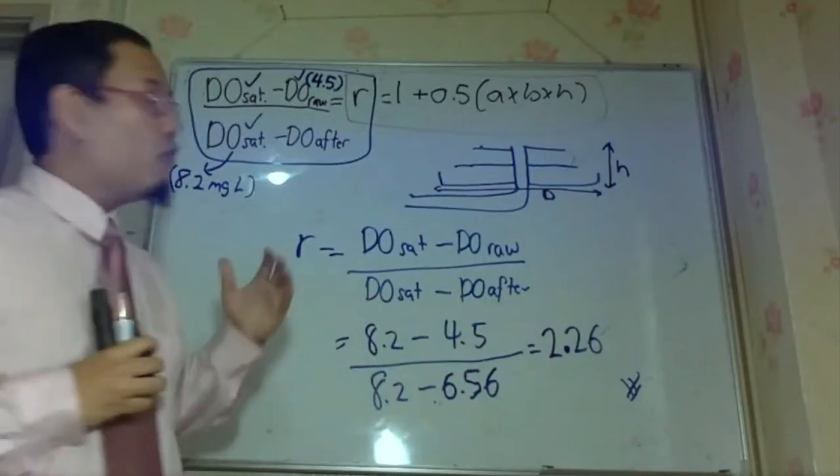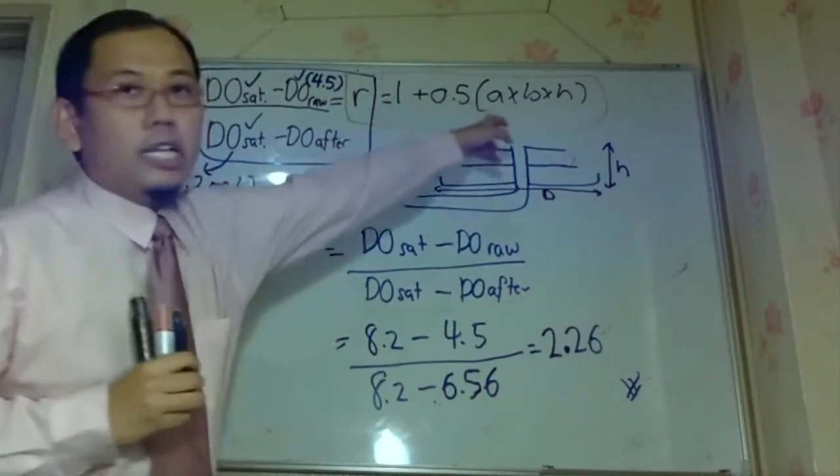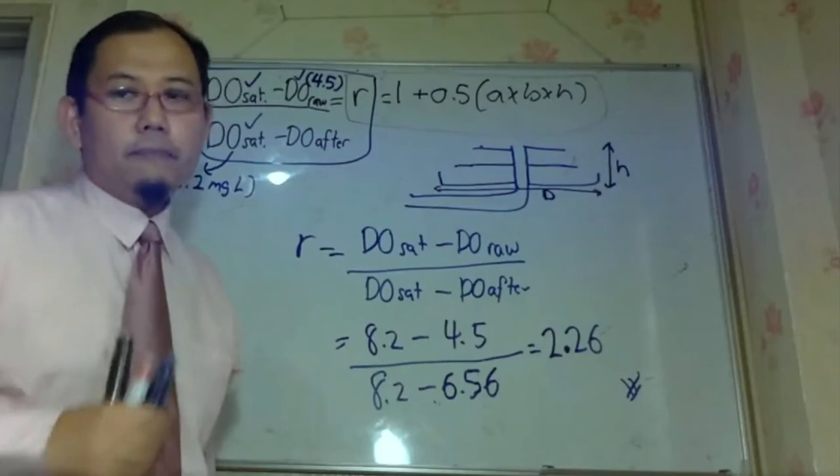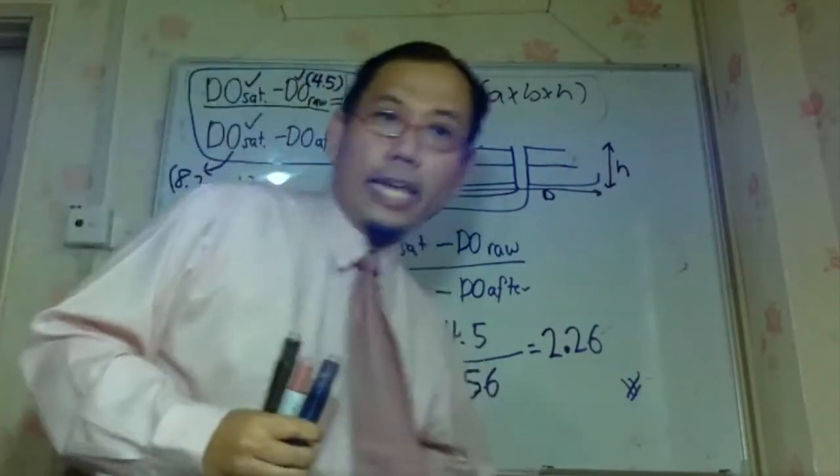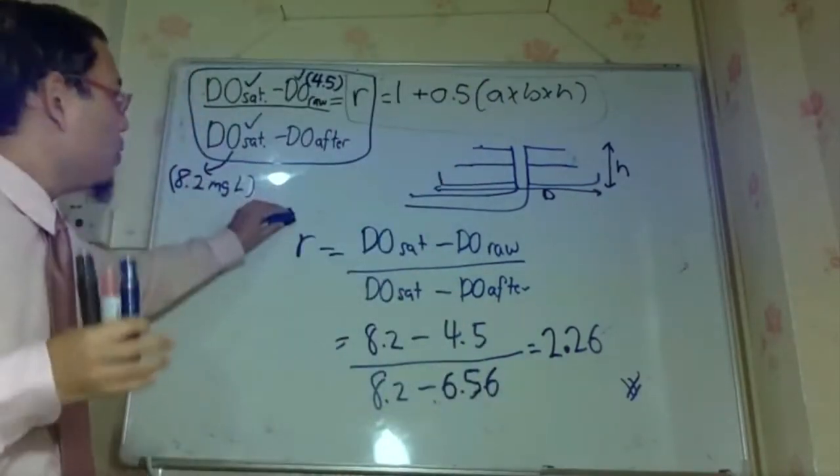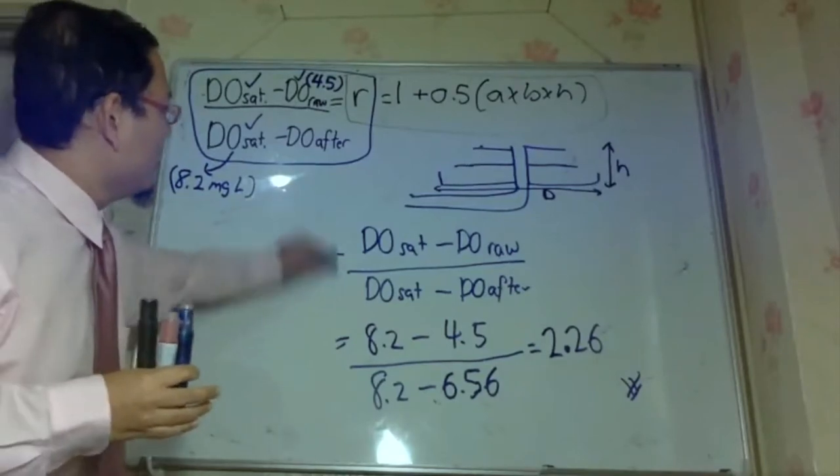Right, so we have already got the value of R, so we can put it in the Garmeson formula. So I have to wipe it out again, saying we don't have a big whiteboard.